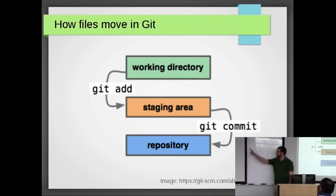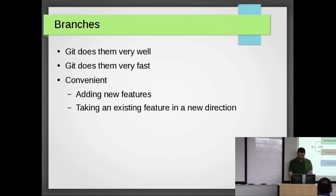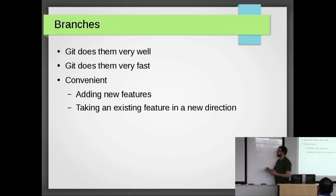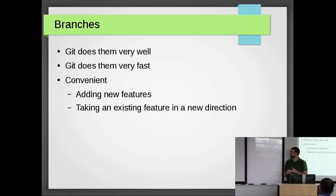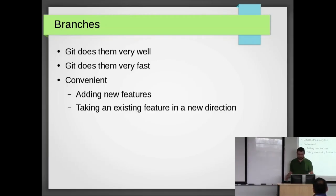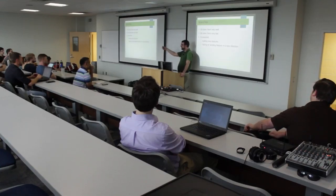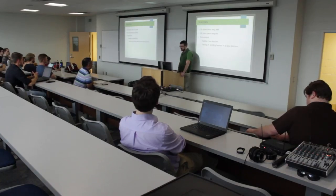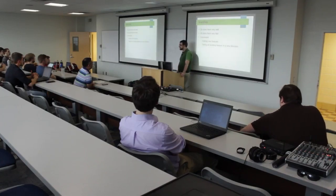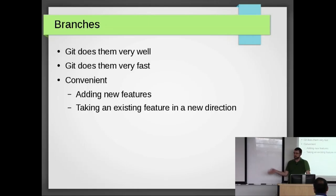This is a visual representation: if you're in your working directory and run 'git add', it adds to the staging area. If you do 'git commit', it commits to the repository. Branches — Git does them very well and very fast. When Git first came out, SVN didn't do branches very well. Git is also decentralized — you don't have to have a centralized server where only one person can work on one file at a time. Branches are convenient: you can add new features, take an existing feature in a new direction. If you want to try something out, start a new branch. If it doesn't work, just delete the branch and go back to your old code.